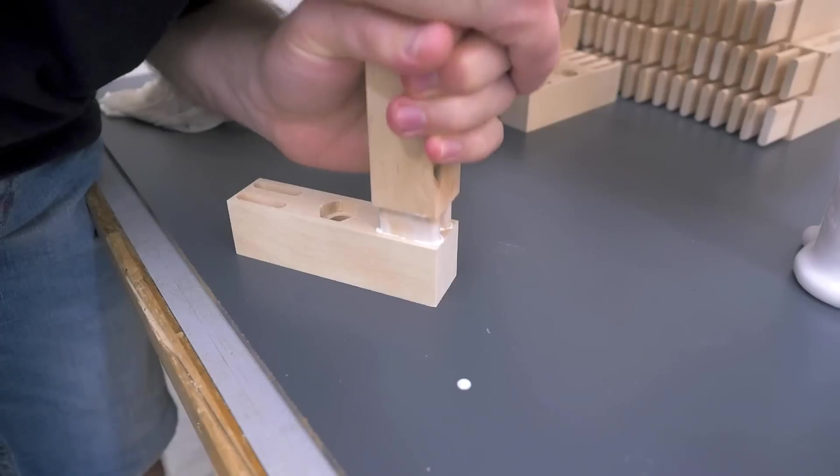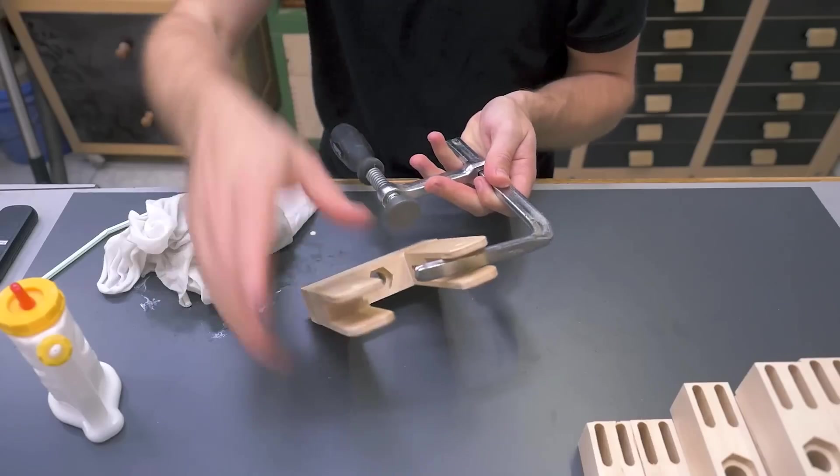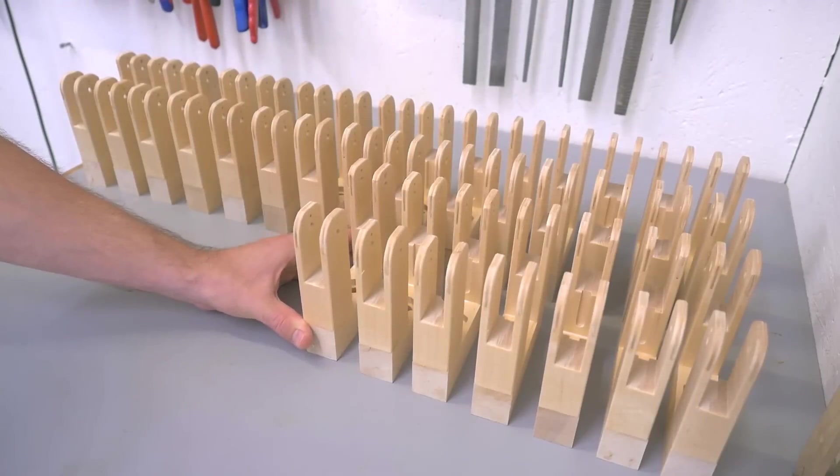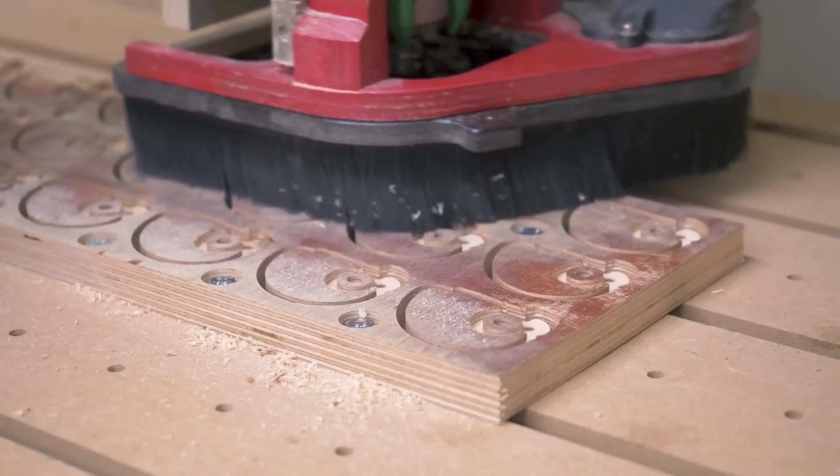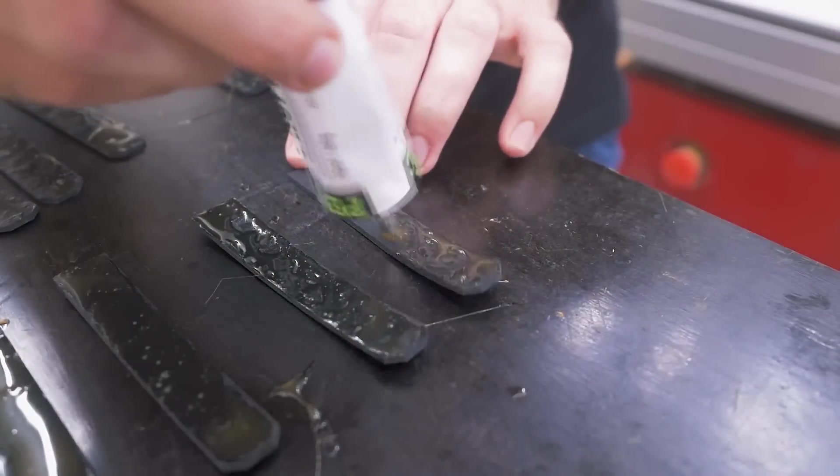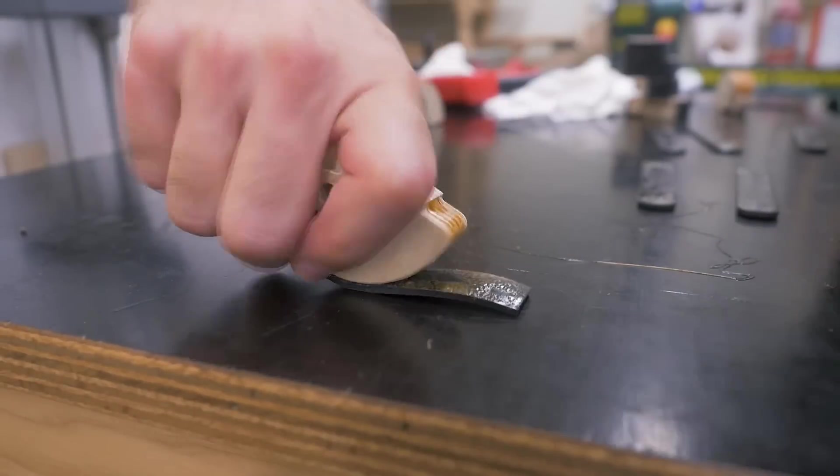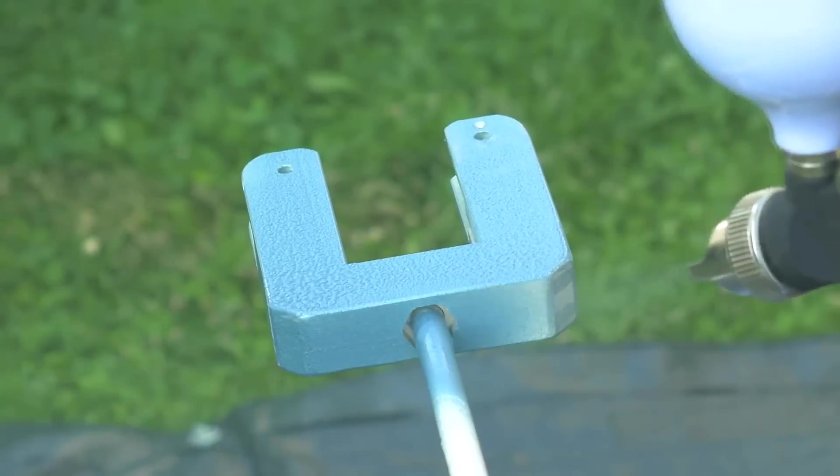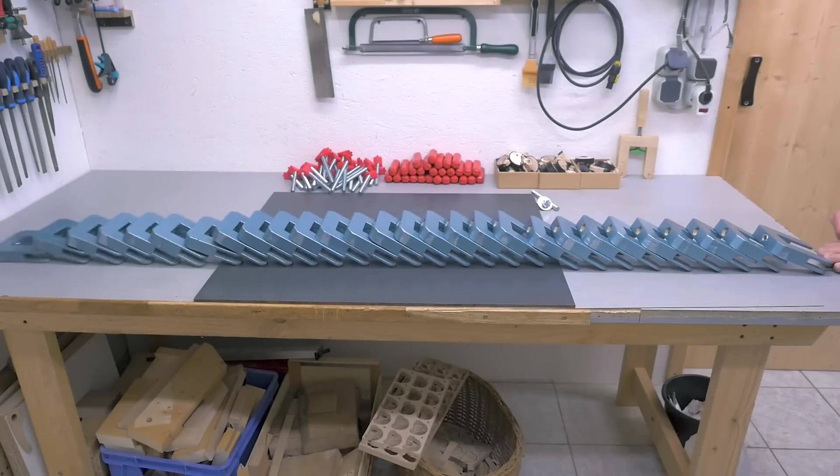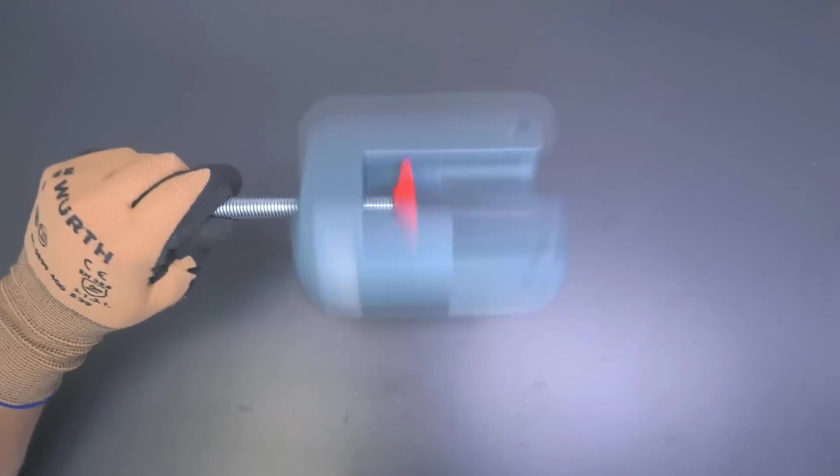And gluing up precisely cut mortise and tenon joinery from the pantorouter is always a treat. He also used the CNC router to cut the precise shape for the cams including a little cavity for the springs to fit into. And then a layer of rubber onto the cams to really engage that work piece better. And finally a really nice metallic looking finish to finish his 30 edge clamps.